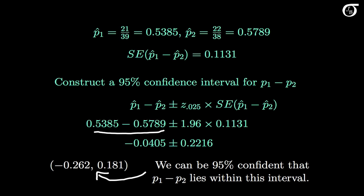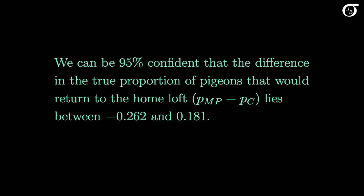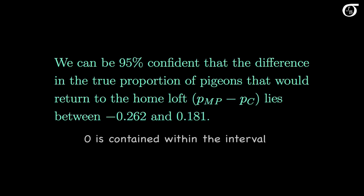We can be 95% confident that the difference in population proportions, p1 minus p2, lies somewhere in this interval. In context, we can be 95% confident that the difference in the true theoretical proportion of pigeons that would return to the home loft for the magnetic pulse group minus the control group lies between minus 0.262 and 0.181. One important point is that 0 is contained within this interval, so it is plausible that the true proportions are equal. Based on this interval, this experiment does not give any evidence of an effect of the magnetic pulse. But if we want to see formal evidence of an effect, we can carry out a hypothesis test.